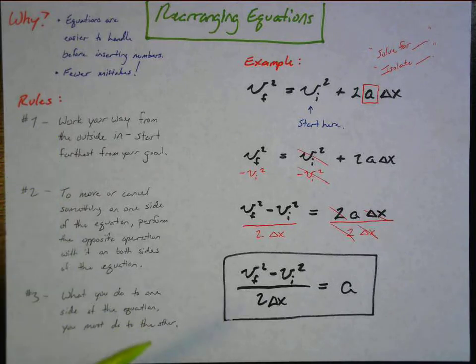You'll see what that means when we get to the example. Number two: to move or cancel something on one side of the equation, perform the opposite operation with it on both sides of the equation. You'll see us do that as well. And number three: what you do to one side of the equation you must do to the other, otherwise it's no longer equal and you've really messed things up. You're going to see all three of these working in this example.